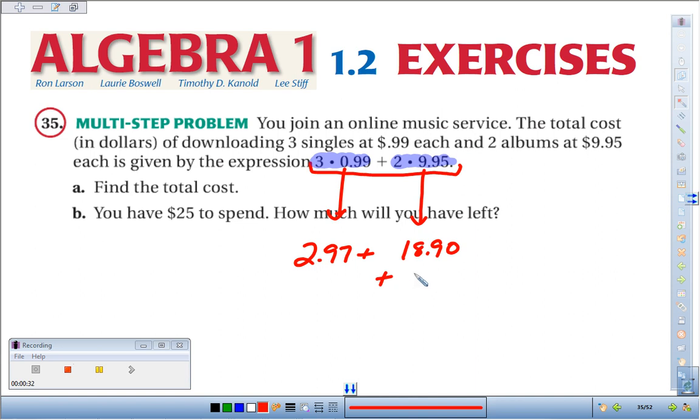So our total cost, if we add the albums and the individual songs together, just like you might do on iTunes. Zero and seven, seven. Here we have 18, carry the one. Nine and two makes 11. Carry the one makes $21.87.